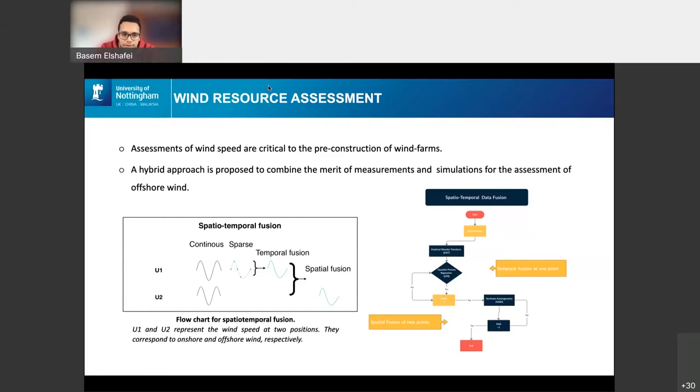WRF is the Weather Research Forecast, which provides continuous but low fidelity data. I'll start with the left figure. We have U1 and U2. These represent two different wind speeds at two different positions. They correspond to an onshore point and an offshore point respectively. The first method, which is the WRF or the Weather Research Forecast, provides a continuous time series. So the data is available at any point at any time. However, the data is of a low fidelity and we try to improve that by fusing it with a second technique that generates data, which is the LIDAR measurements. On the other hand, the LIDAR measurements provide sparse time series. These are highly accurate, but they are sparse in both space and time. So we don't have them at every time step or at every point in the located area.